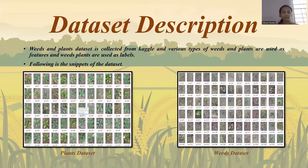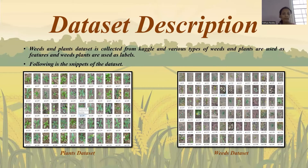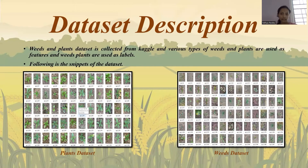For the dataset description, there are two categories: the plant dataset and the weed dataset. This dataset is taken from Kaggle, where each plant dataset is stored in one folder and the weed dataset is in another folder.